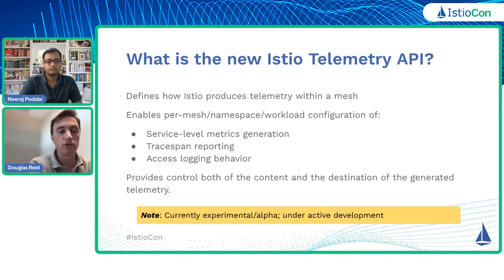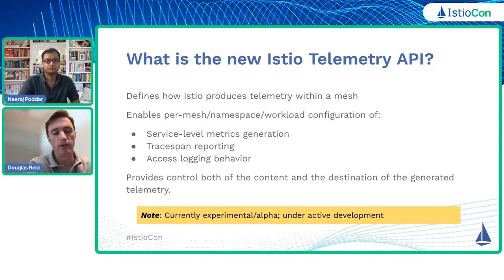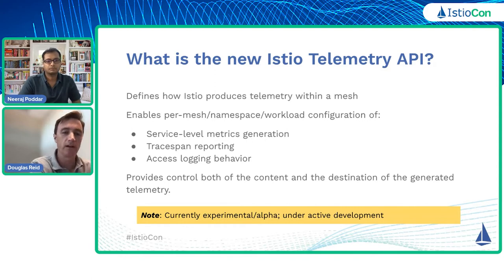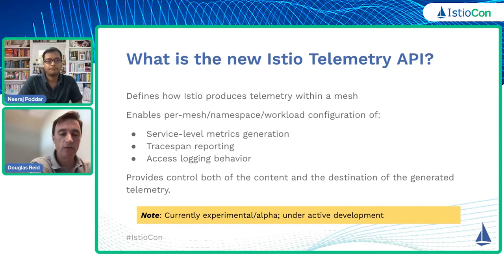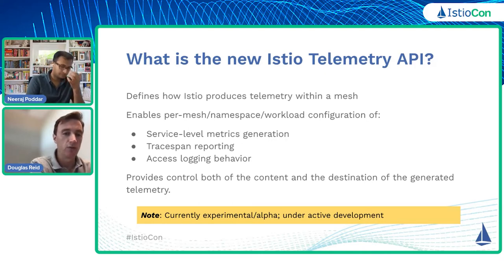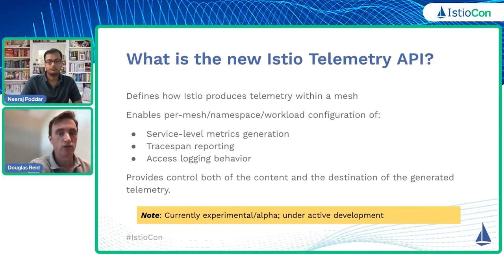When we talk about telemetry generation in the telemetry API, we scoped it to three main areas: the Istio service-level metrics generation — not low-level proxy metrics but service-to-service metrics; trace span generation and reporting, meaning where we're sending trace spans and what content they have; and finally, access logging behavior — whether access logs are enabled and what cases we generate access logs in.